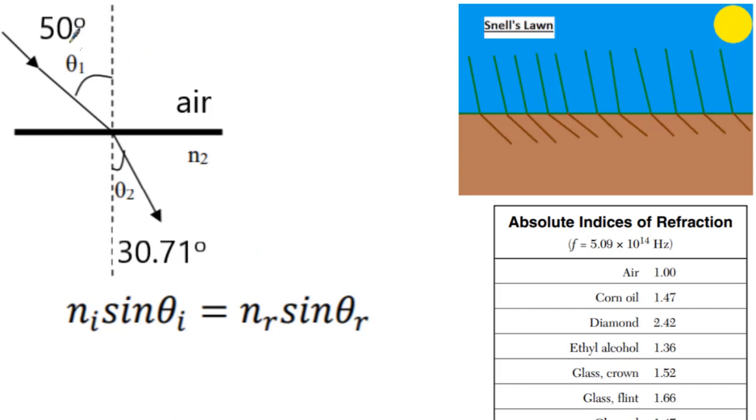So here you can see we have an angle coming in, in air. And what do we know about air? Air has an index of refraction of 1.00. We don't know the index of refraction for the second medium, but we know the first angle, this is theta I, is 50 degrees. It's refracting at 30.71 degrees.